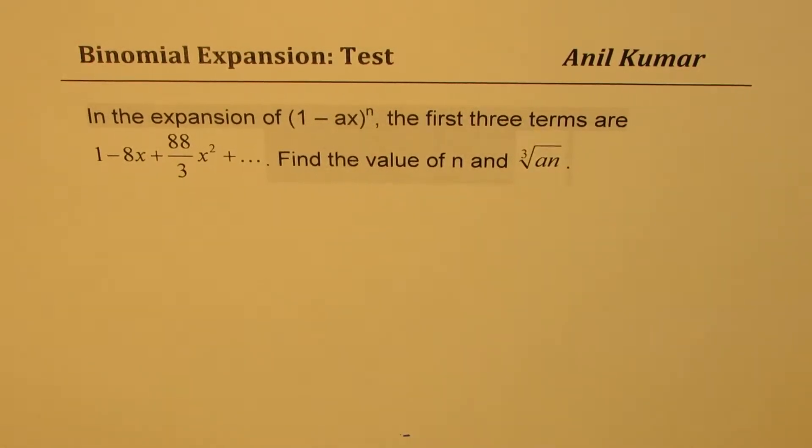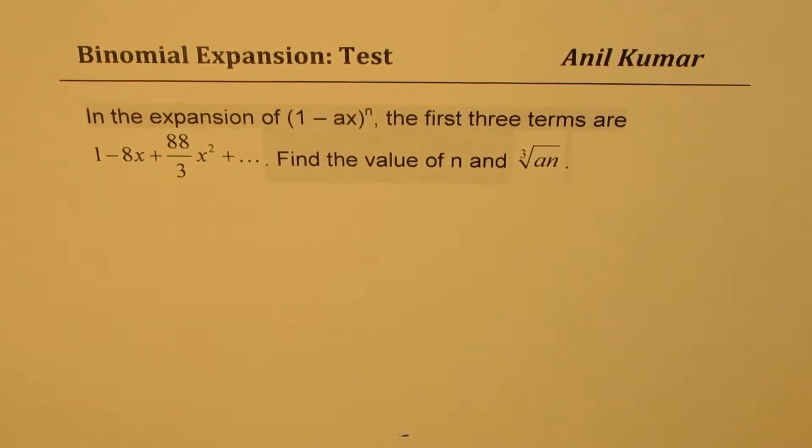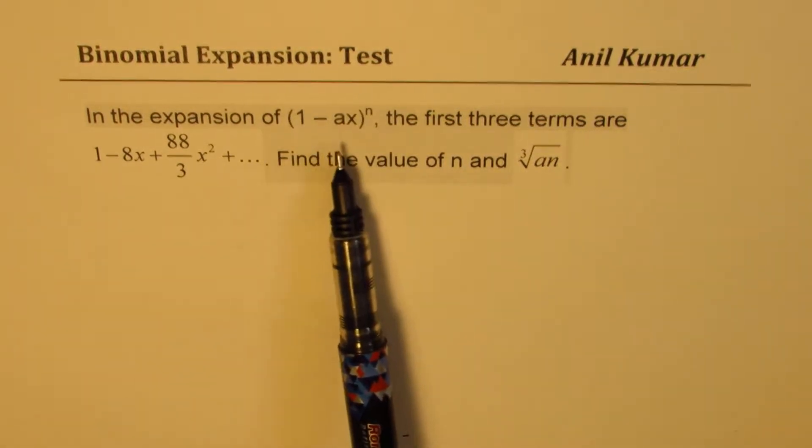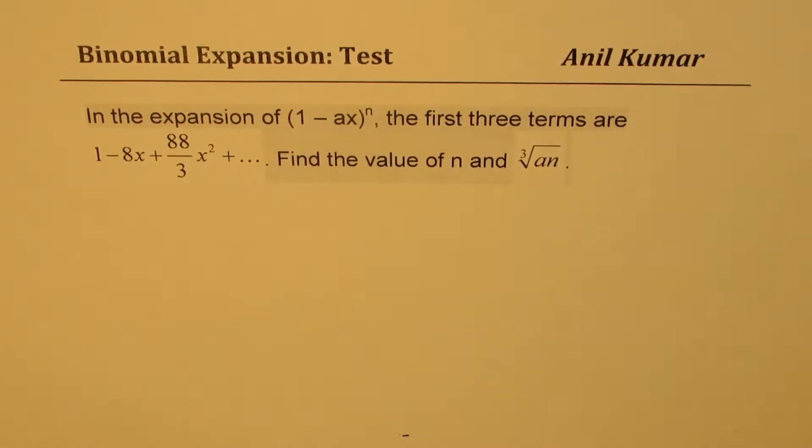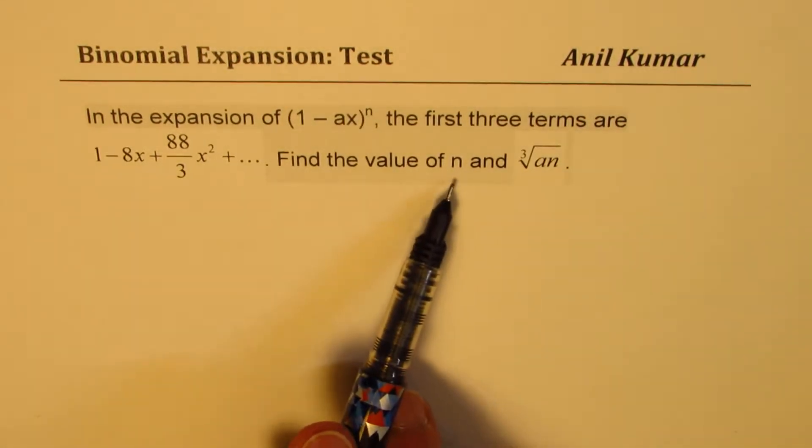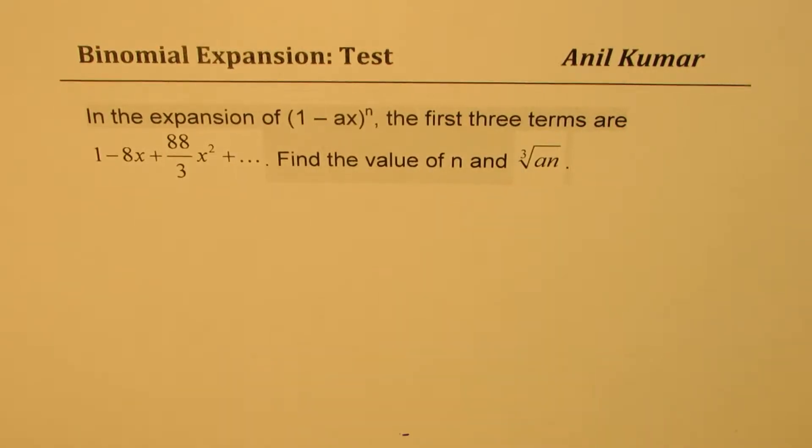I am Anil Kumar sharing with you a test question based on binomial expansion. The question is: in the expansion of (1 - Ax)^n, the first three terms are 1 - 8x + (88/3)x². Find the value of n and the cube root of An.